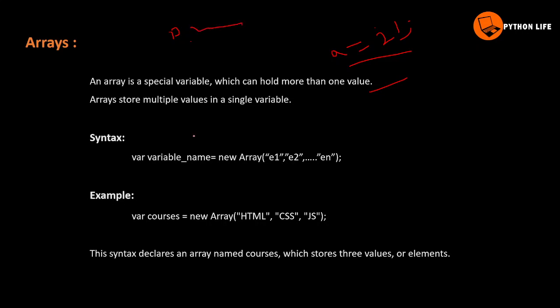A variable can store multiple values — that's what we call an array. So one variable can store four values, for example.